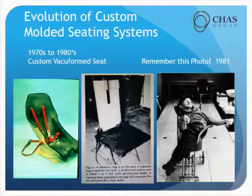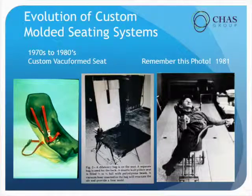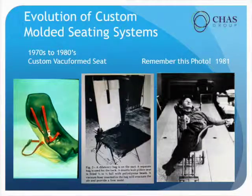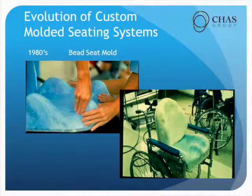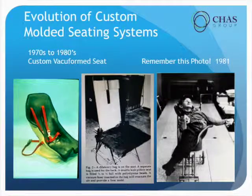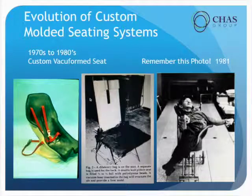This would be the end product of a vacuum form thermoplastic mold. Off to the far right you can see what the custom mold looks like. In the middle is one of your very early vacuum pack or vacuum bag formed seats. I want you to remember that last photo with the gentleman in his custom seat because we're going to address that a little bit later.